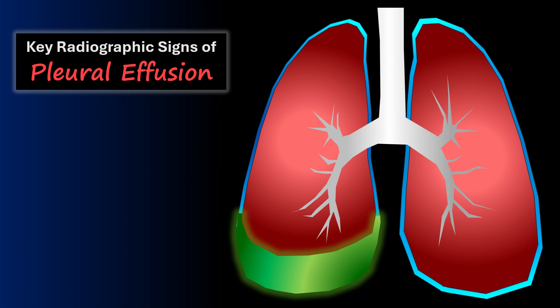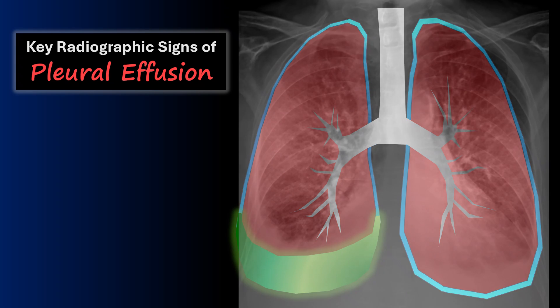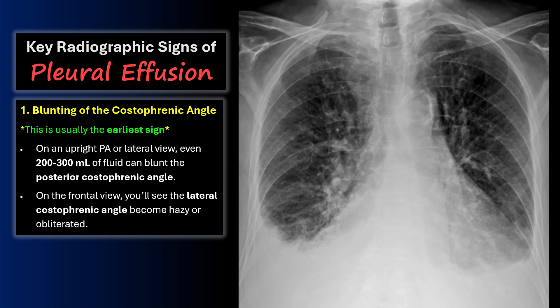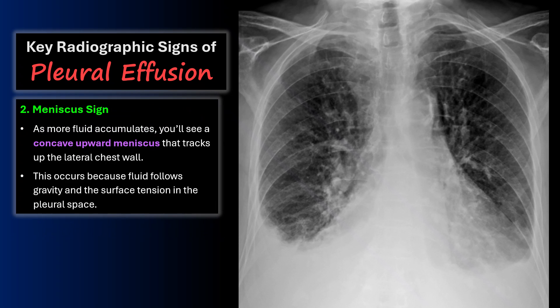Now let's look at the key radiographic signs of a pleural effusion. The first thing I'm looking for on an x-ray is blunting of the costophrenic angle — this is usually the earliest sign. Even 200 to 300 milliliters of fluid could blunt the posterior costophrenic angle, and on the frontal view you'll see the lateral costophrenic angle become hazy or obliterated.